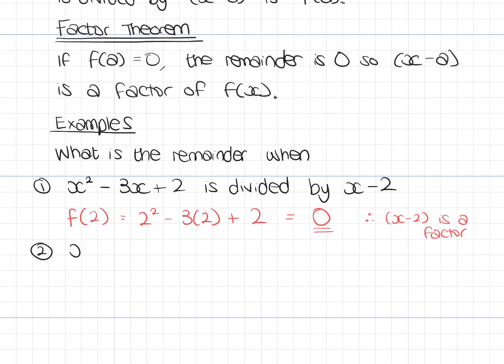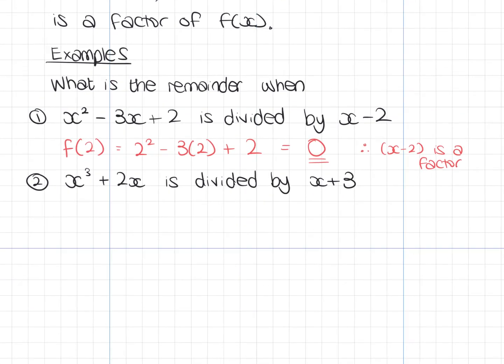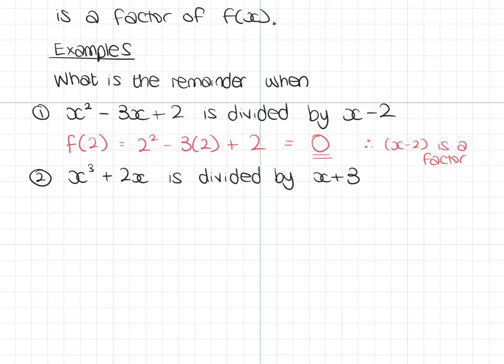Example 2, then. x cubed plus 2x is divided by x plus 3. So, this time, you'll see that the sign's different. So, when it was x minus 2, we put a positive 2 in. If it's x plus 3, we're going to work out f of minus 3. I'm going to do minus 3 cubed plus 2 times minus 3. And that gives me minus 33. So, the remainder, when I divide x cubed plus 2x by x plus 3, the remainder is minus 33.